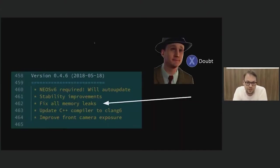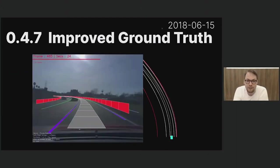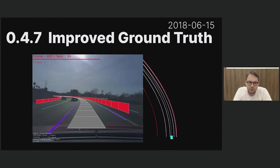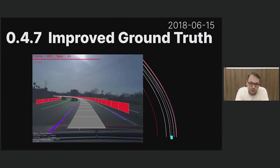Going through the release notes, I noticed a funny thing in version 0.4.6 which said 'fix all memory leaks' — I don't think that was actually true, but it was very optimistic. In version 0.4.7, we shipped the first model with our improved ground truth stack. Before, we tried to recover the path the car took using mostly a gyroscope, but all gyroscopes have a bias we didn't remove properly. So all the models had a bias pointing slightly to the right — we even had a fixed offset of 1.5 degrees we always subtracted before sending the steering angle. After this fix, it was finally gone.